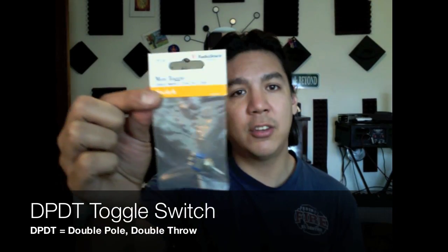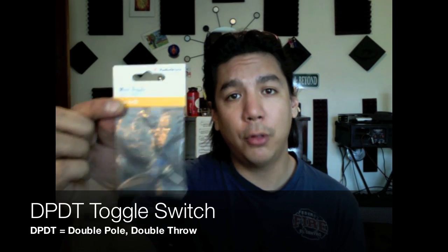Now, next, you're going to need a toggle switch. You're going to need this, it's called a double pull, double throw switch. It means it has six terminals on the bottom, we'll talk about that more later.